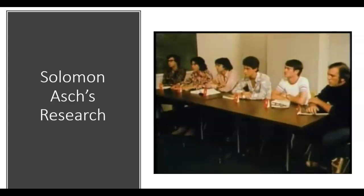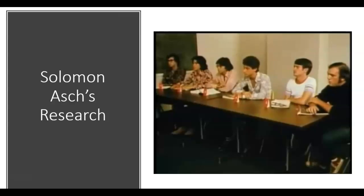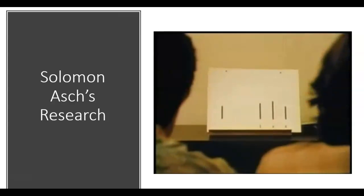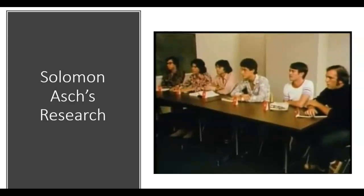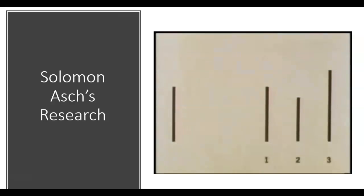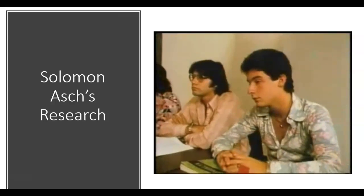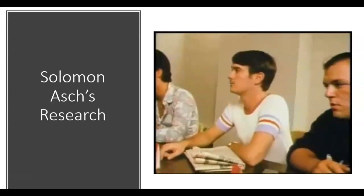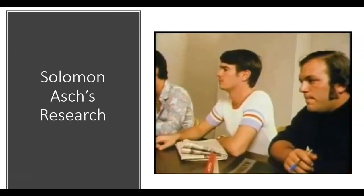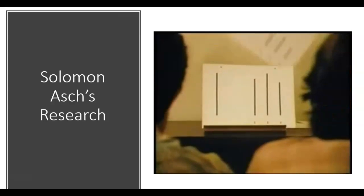The experiment begins uneventfully as subjects give their correct judgments. But on the third trial, something happens—the confederates give wrong answers—and the subject denies the evidence of his own eyes and yields to group influence.